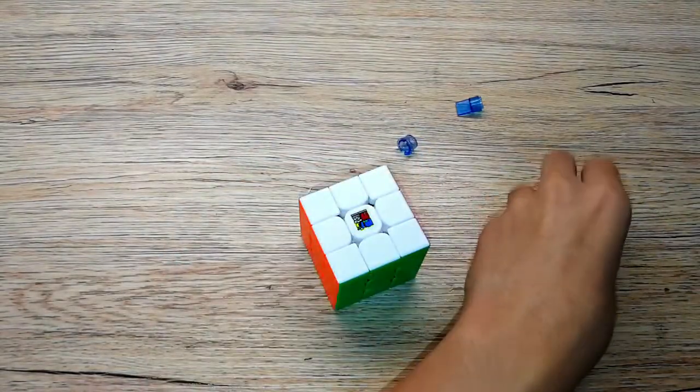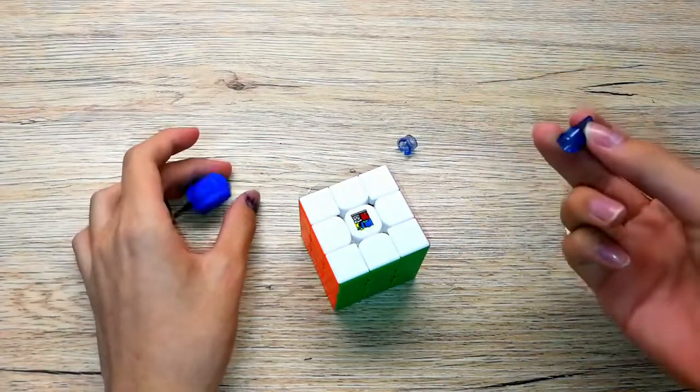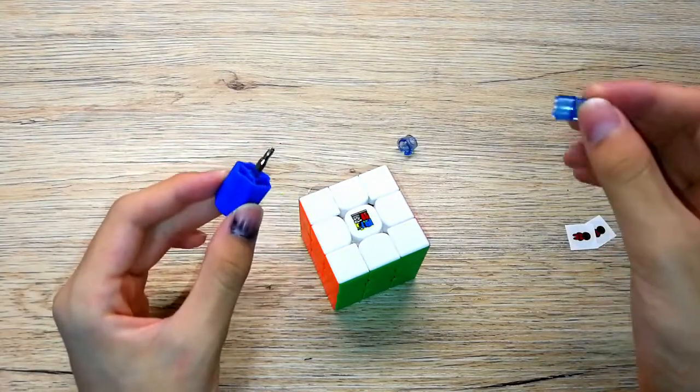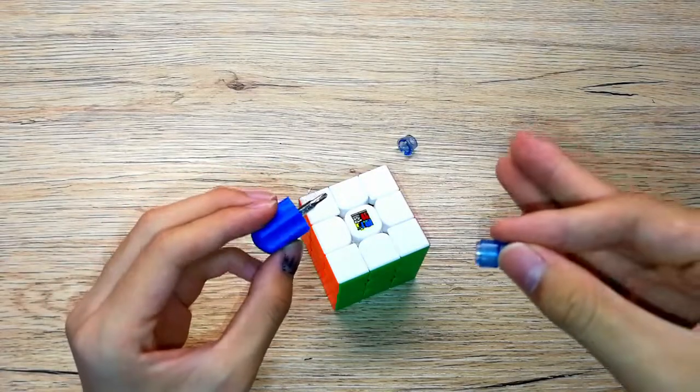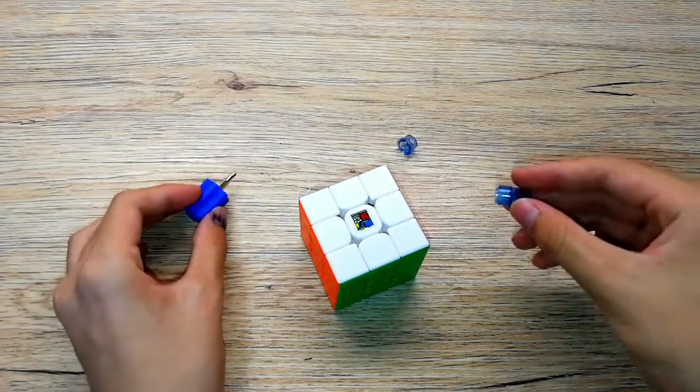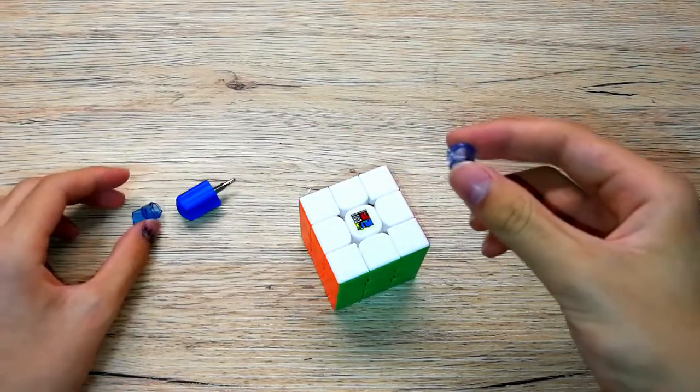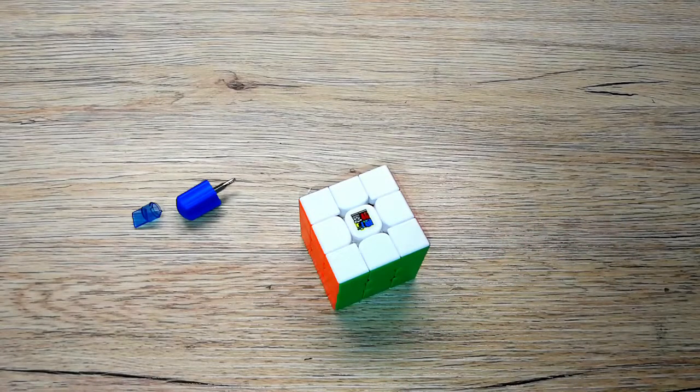We pretty much have everything here. I'm going to tension it with the Moyu screwdriver. This one is for the screw, this one is for the spring compression system. I'm just gonna make myself clear here so you guys won't get confused. I'm going to leave these three stickers for later.